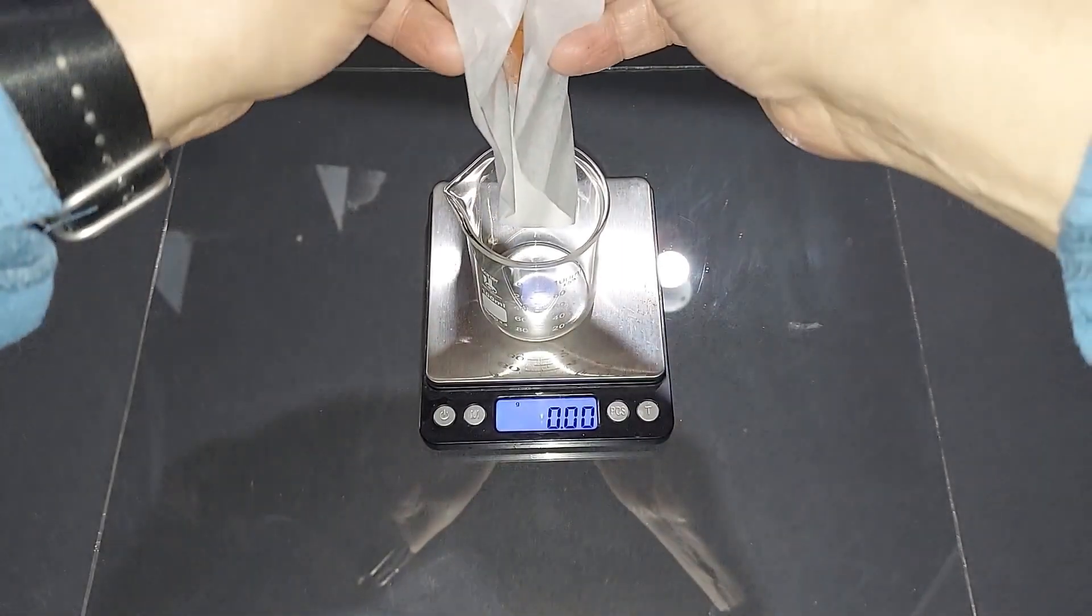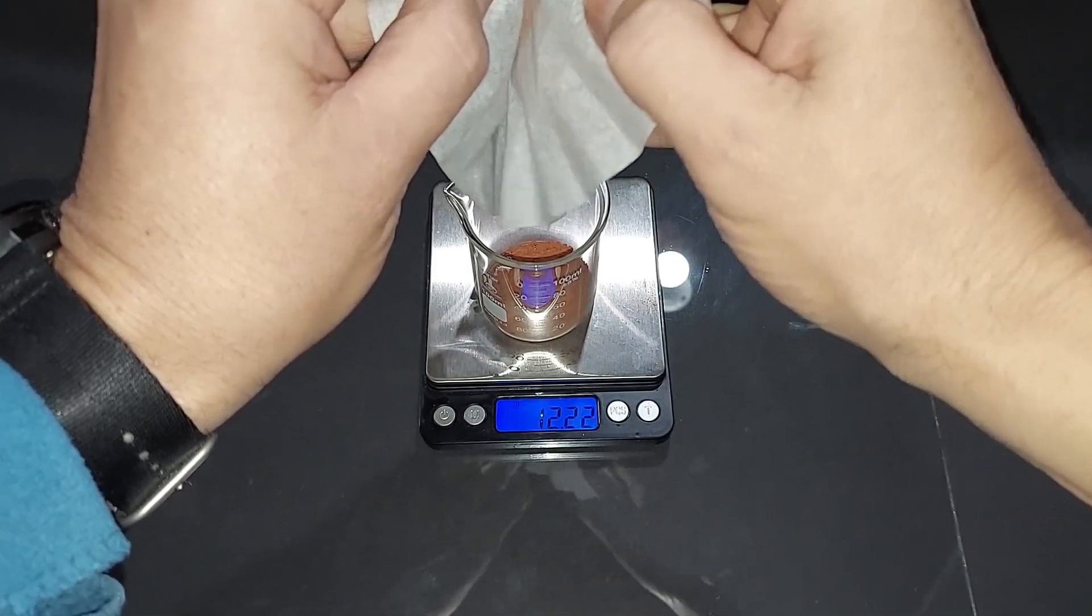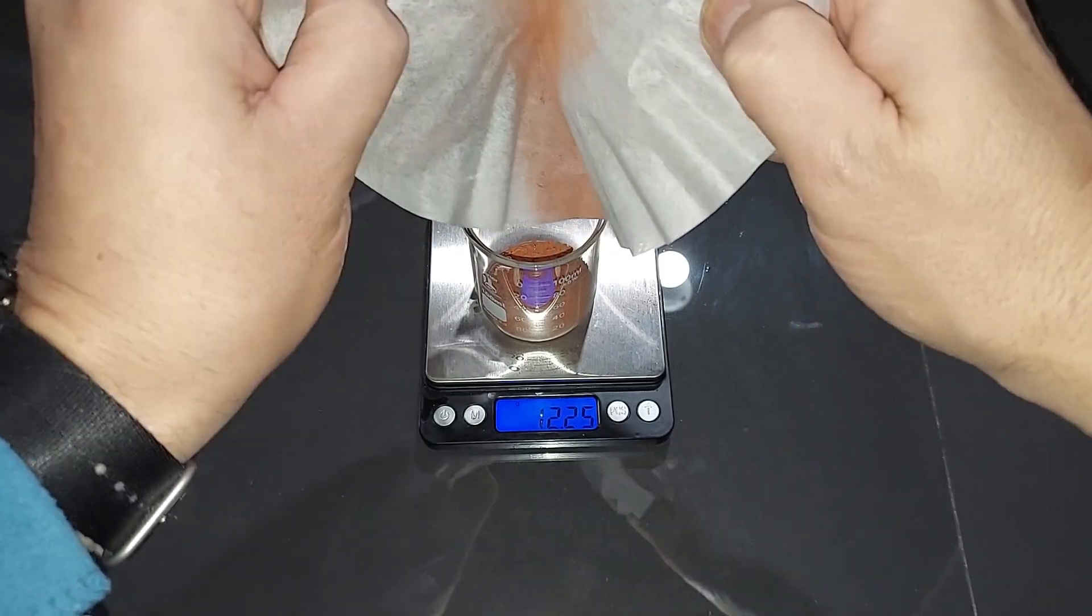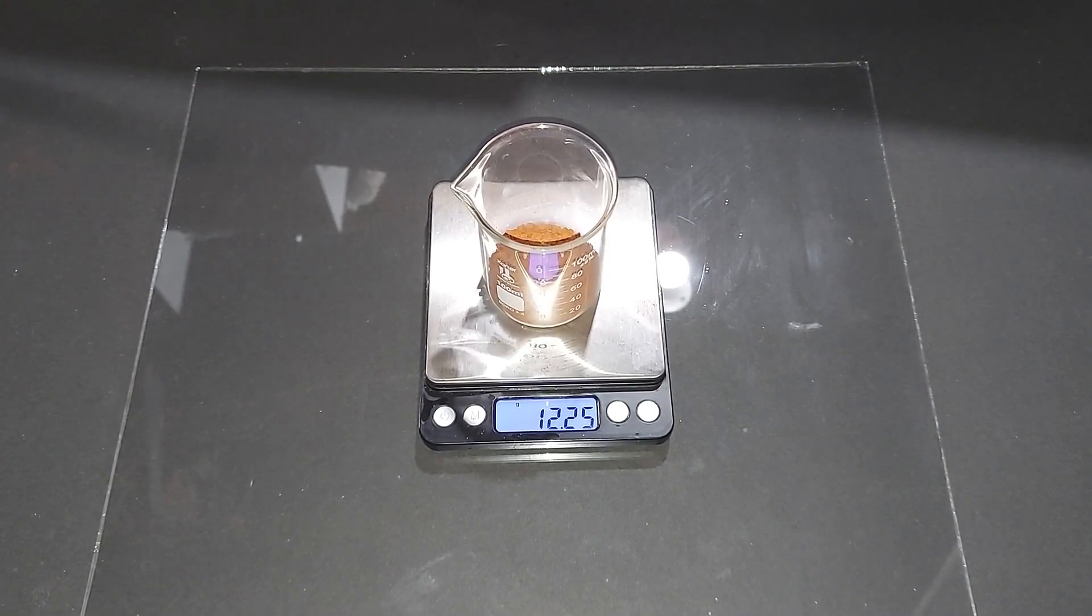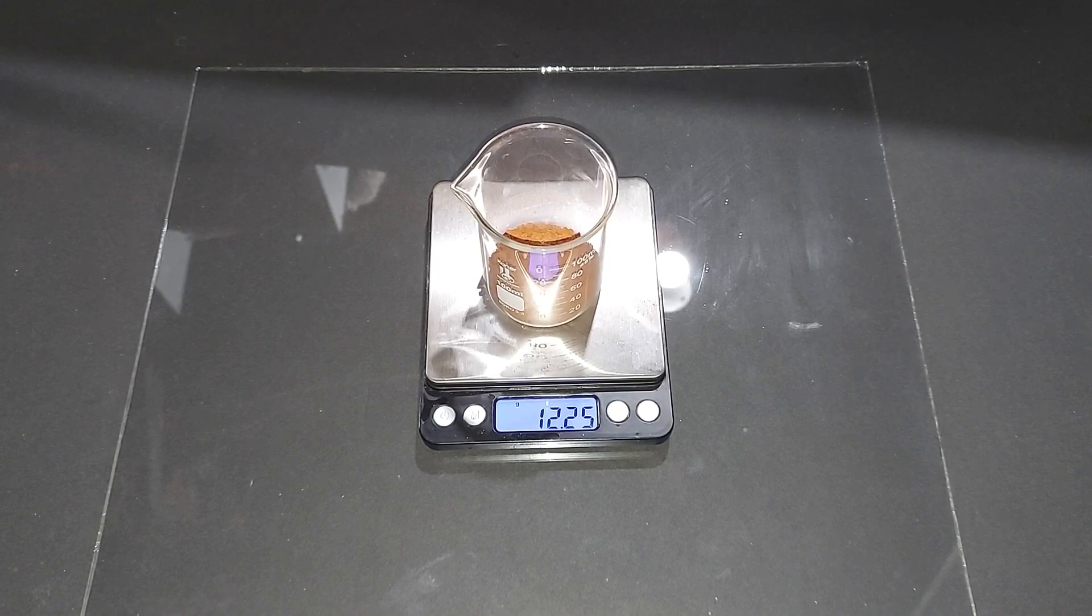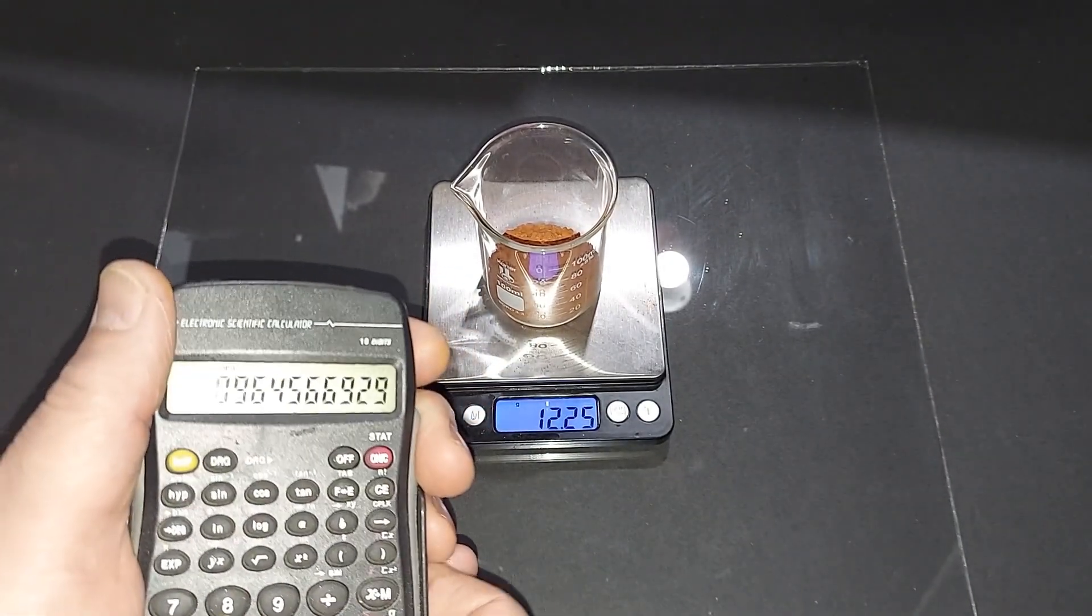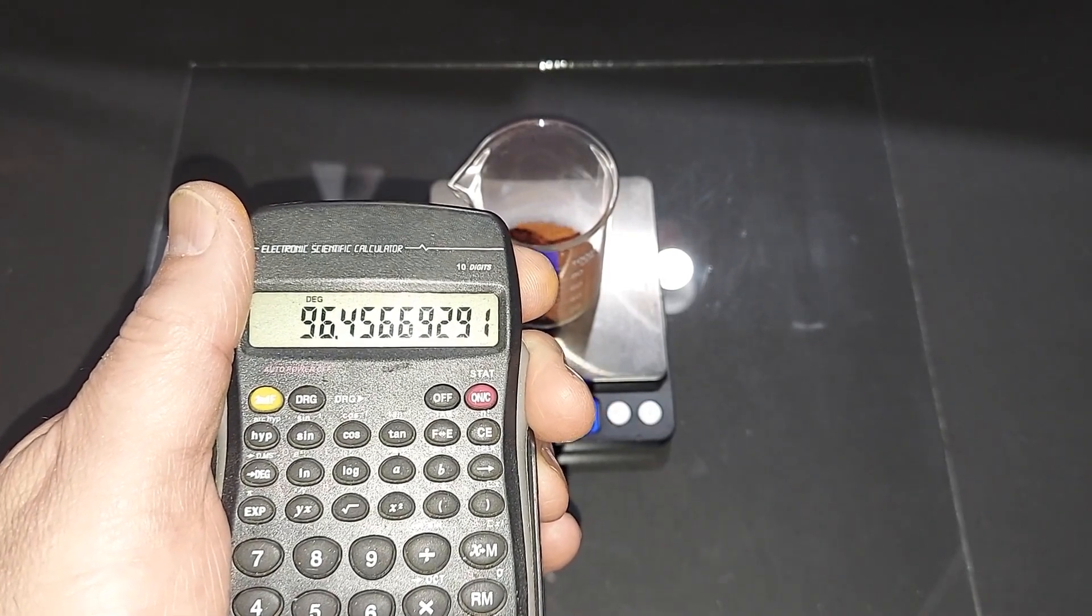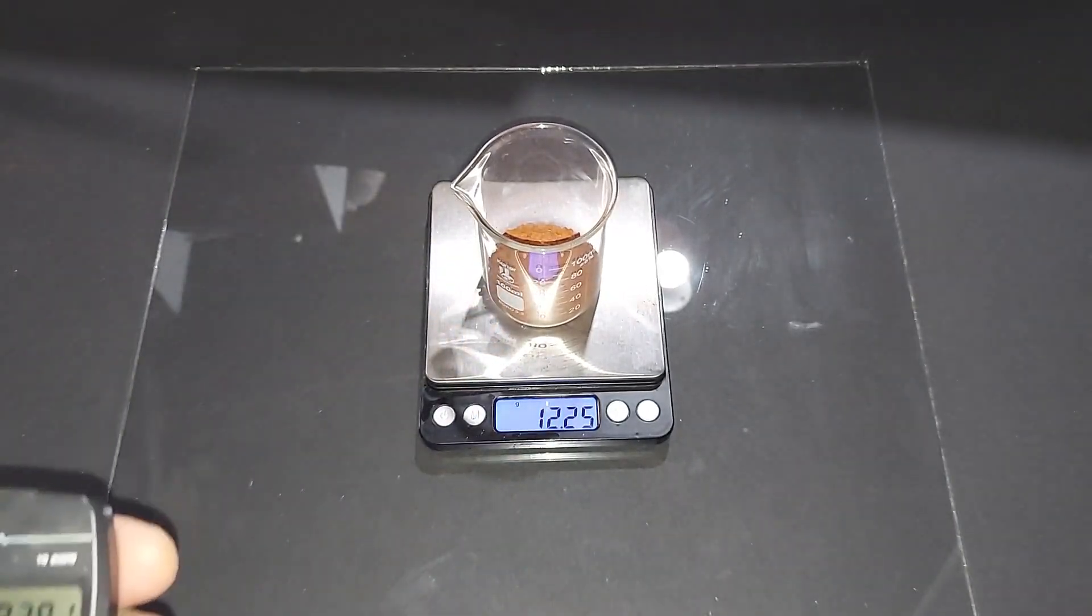I've got this 100 milliliter beaker on this scale, tared to zero, and we'll do this right here. Let's see what we got here. Minus a very very small amount stuck on the filter paper, here we have 12.25 grams. We expected 12.7 grams. So if we take 12.25 divided by 12.7, that's 0.9645. If we multiply that by 100, that's 96.456 percent yield. I'm okay with that, I'm really happy with that, and it was fun to make raw copper metal.